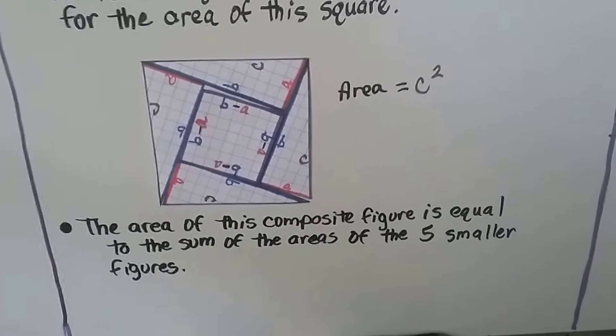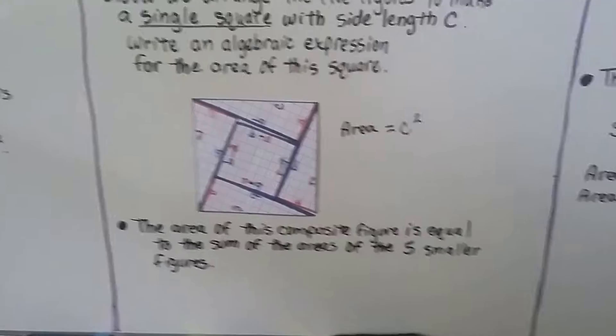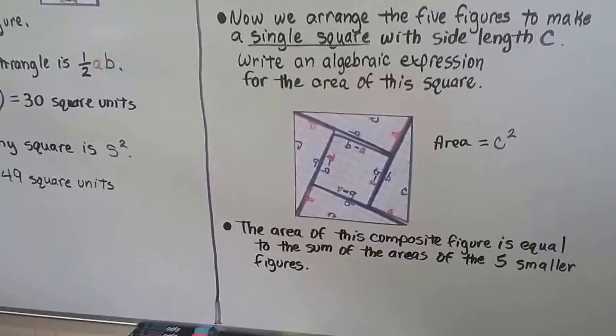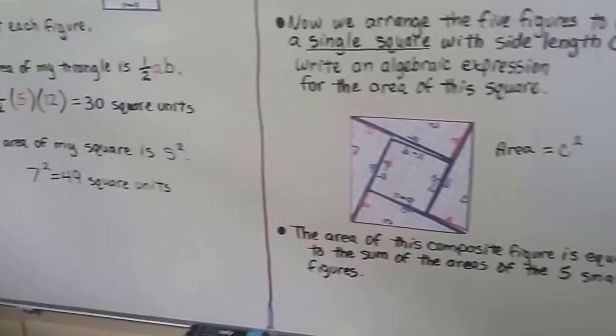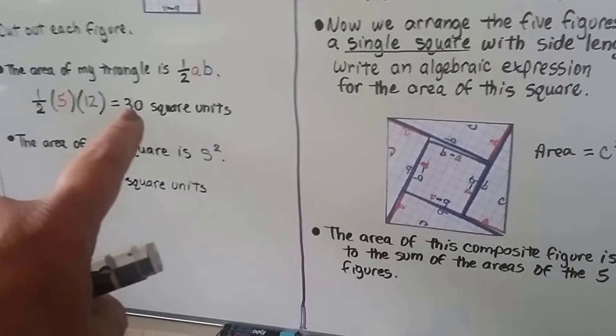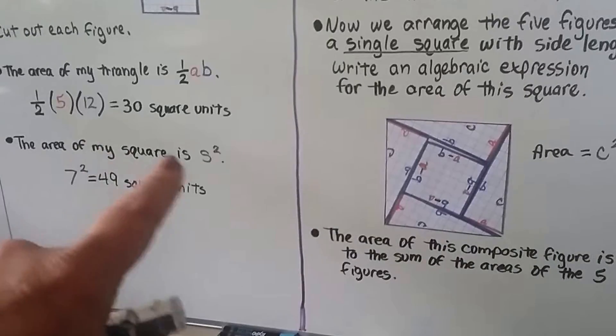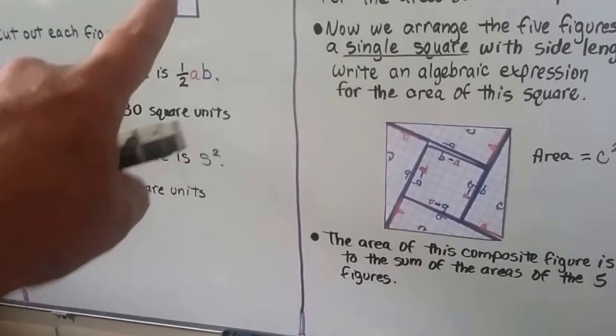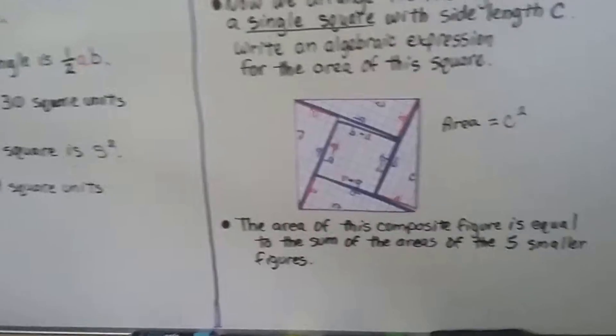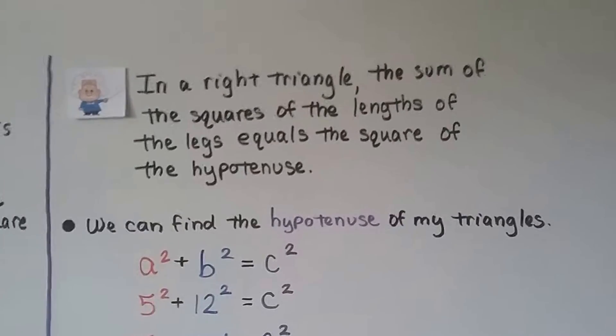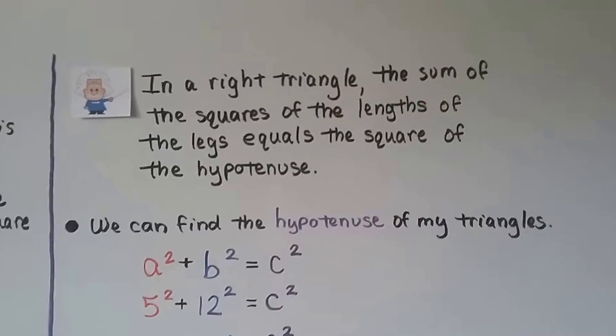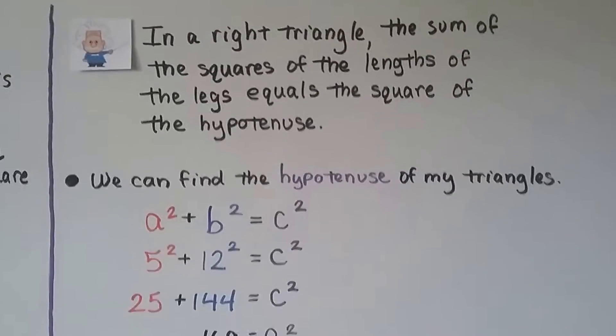And the area of this composite figure is equal to the sum of the areas of the five smaller figures. So one triangle is 30, and we had four of them, right? And the area of the square, this little square here, is a 49, right? So in a right triangle, the sum of the squares of the lengths of the legs equal the square of the hypotenuse. That's what the Pythagorean theorem says.